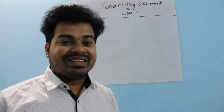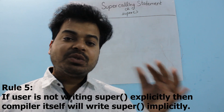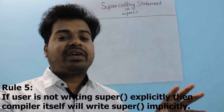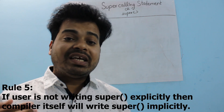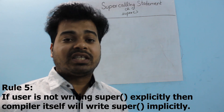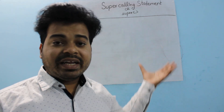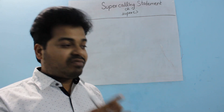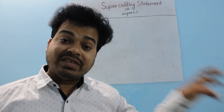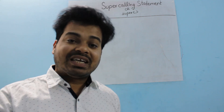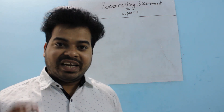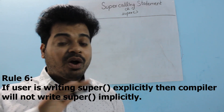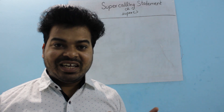Rule number five: if a user does not write the super calling statement explicitly in a constructor, then the compiler itself will implicitly write the super calling statement. If the super calling statement is not visible in your constructor, the compiler will add it automatically. Rule number six: if the user explicitly writes the super calling statement, then the compiler will not write it implicitly.